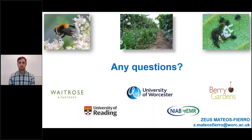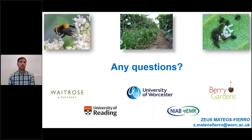How far will solitary bees travel from a wildflower strip to the cherry crop? It depends on the species, but the average solitary bee travels about 200 metres. Bumblebees can travel about one kilometre or even more, but solitary bees normally travel around 200 metres.